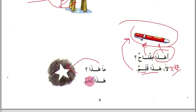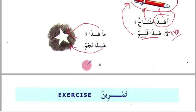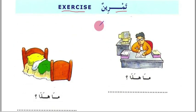'Ma hadha? Hadha najmun' — what is this? This is a star. Now 'tamrin', which means exercise.